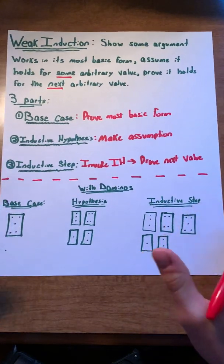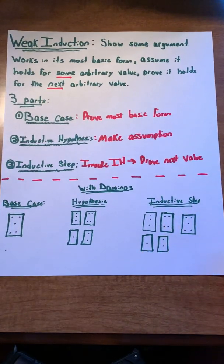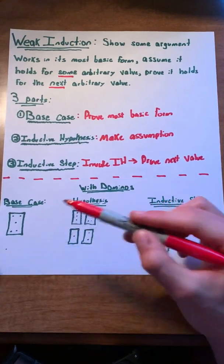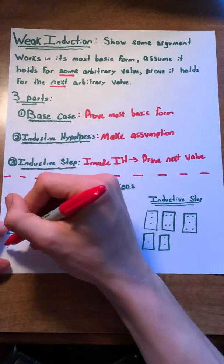Perhaps another way we can illustrate the concept of weak induction is with dominoes. Suppose we're trying to prove that we can push over some amount of dominoes in a row. Our base case would be one domino. We know that we can push over one domino.